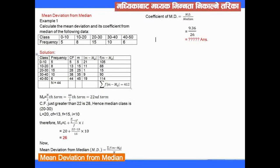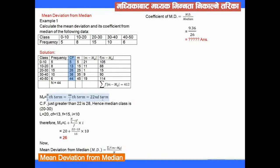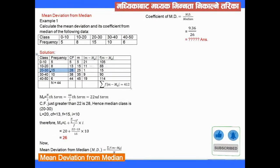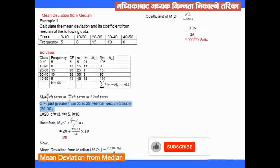First, to find the mean deviation, we need to find the median. So we build a table and find the cumulative frequency (CF). Using the formula, the n/2 term gives us the 22nd item. The just-greater CF value than 22 is 28, so the median class is 20 to 30.